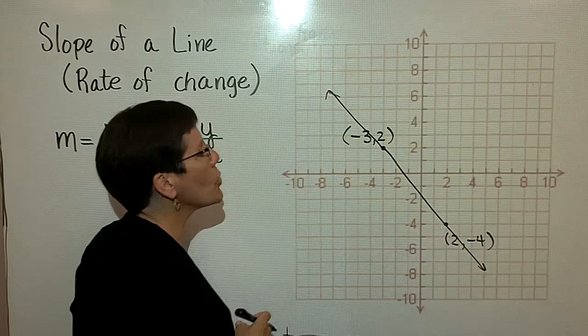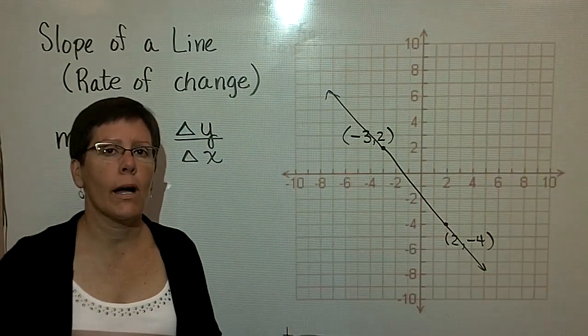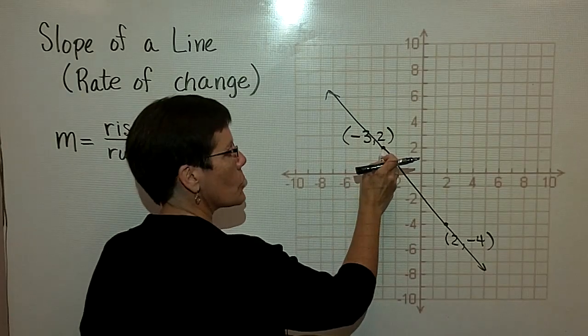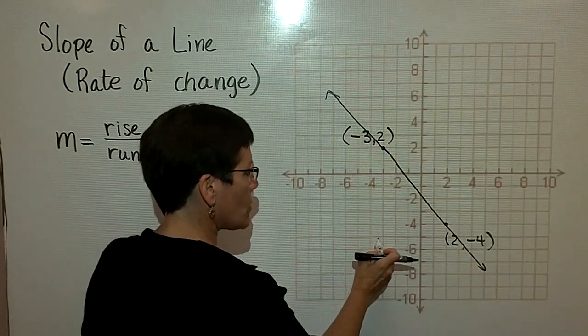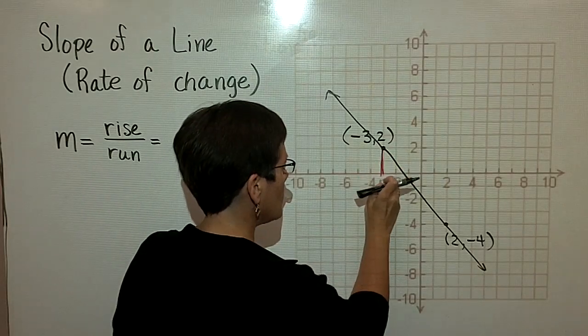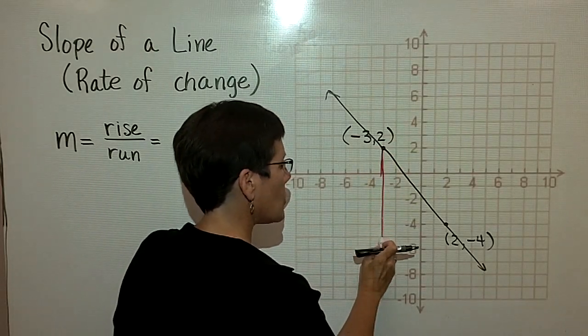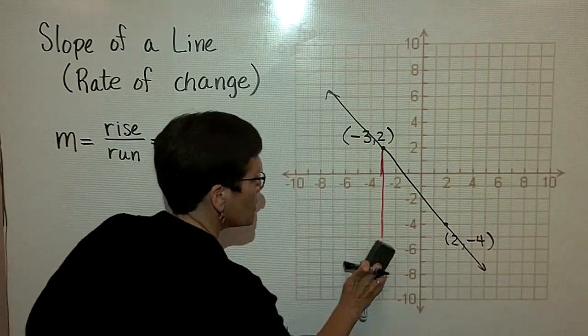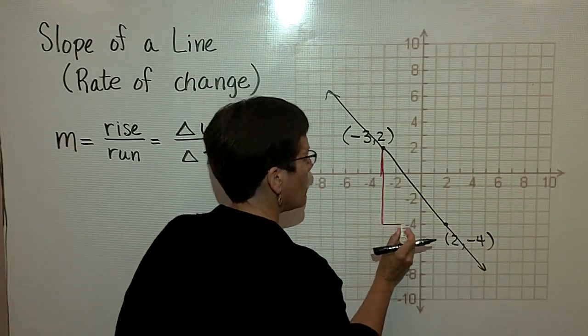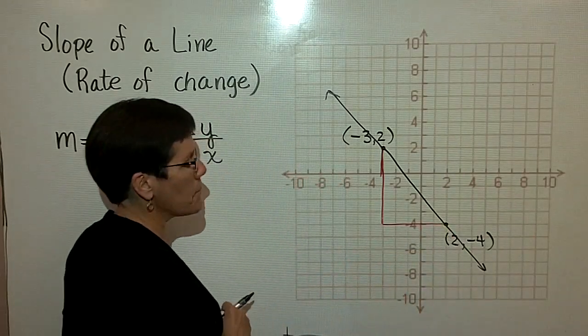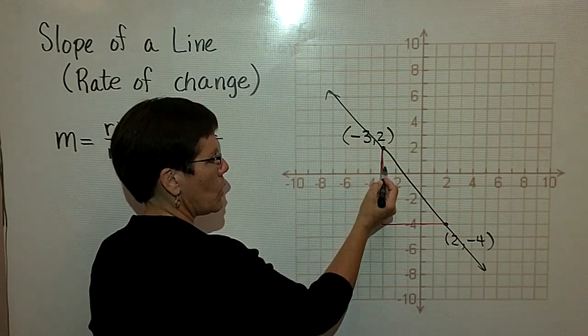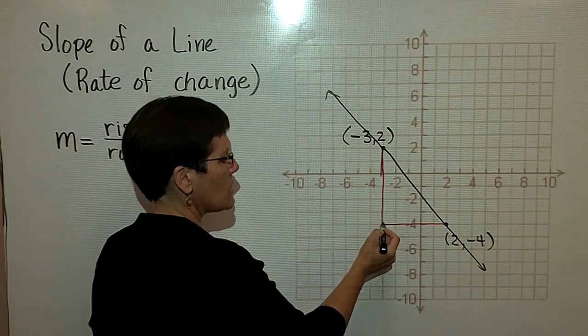And I want to determine what the change in Y over the change in X is. I can either start from this ordered pair and go in the Y direction to this point right here. So I would go down to that point right there, and then run over that way. So let's just look at that. I have gone in the Y direction, I've gone down 1, 2, 3, 4, 5, 6.